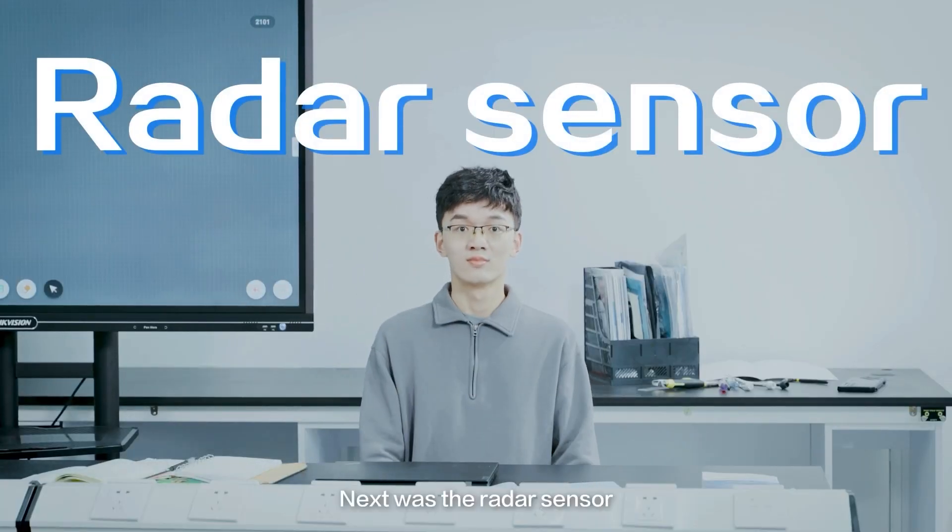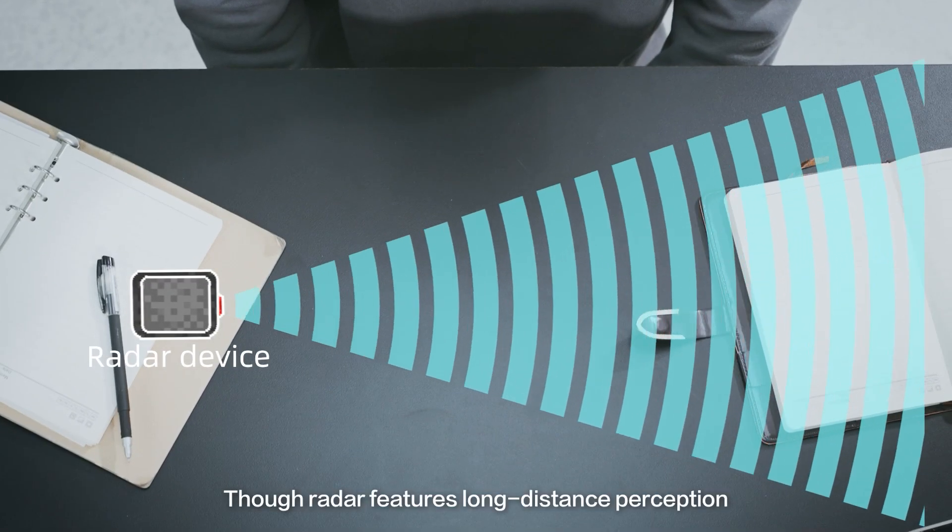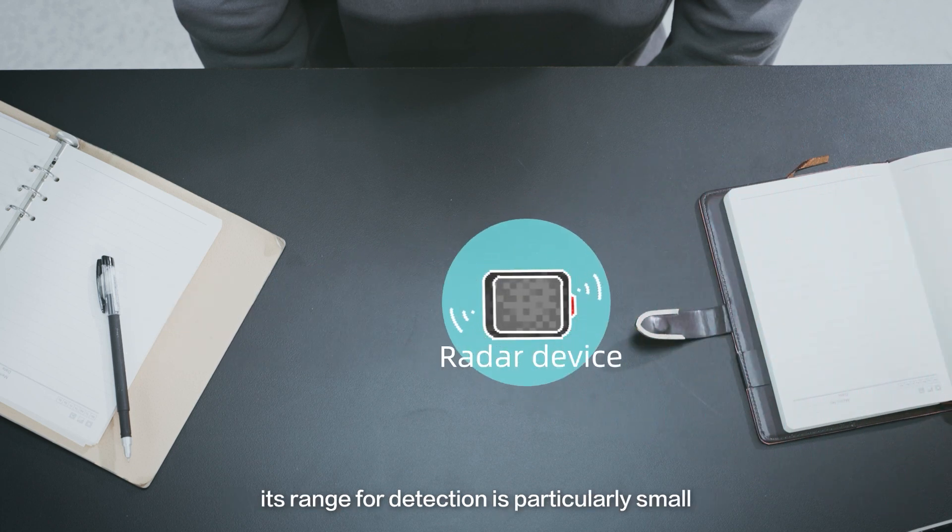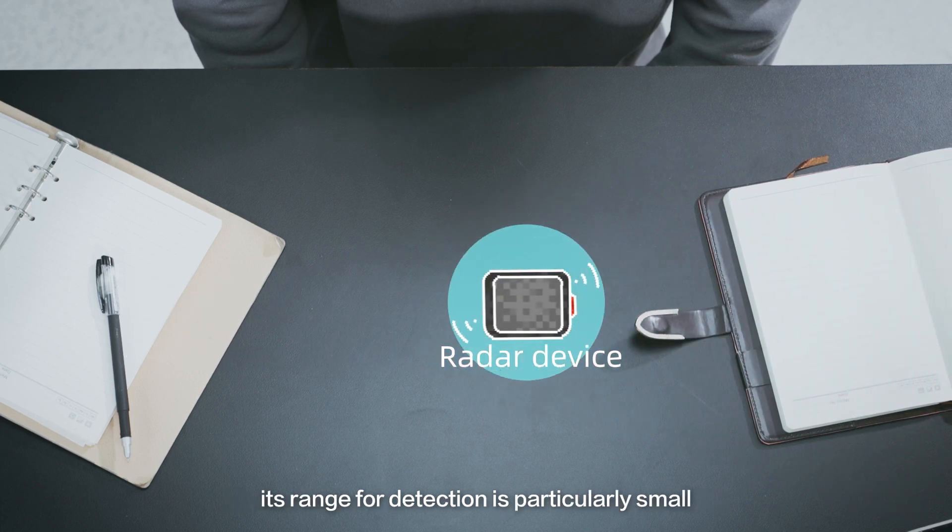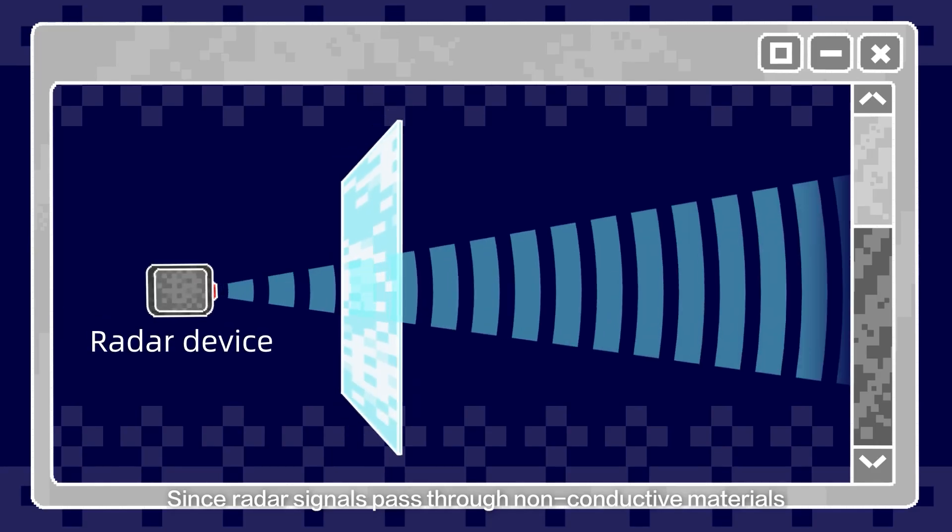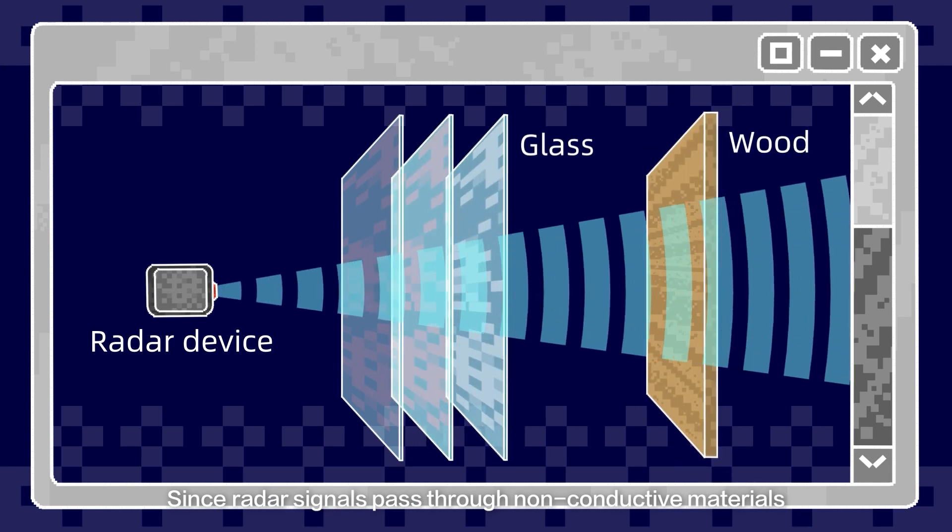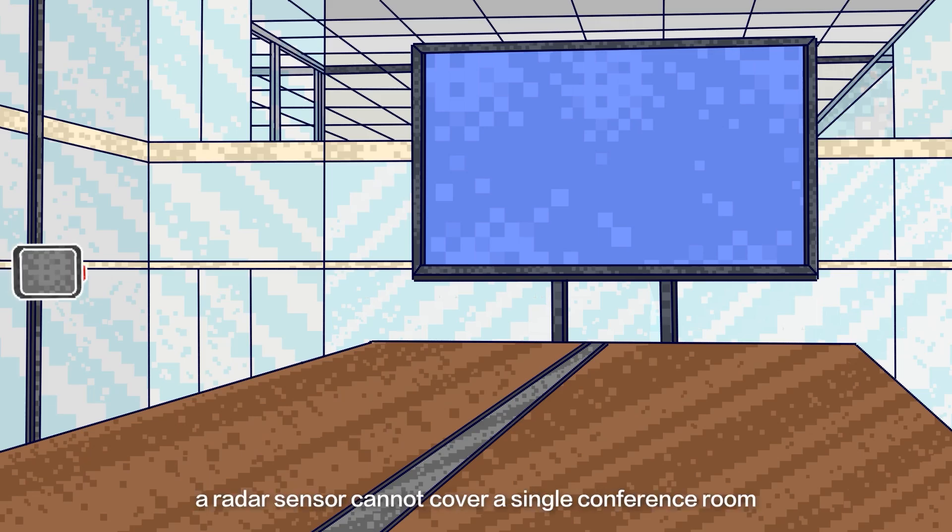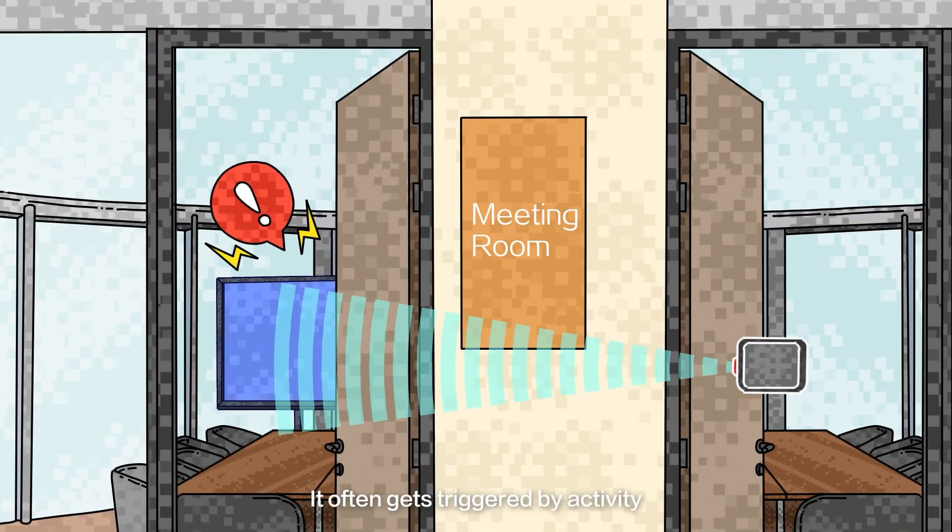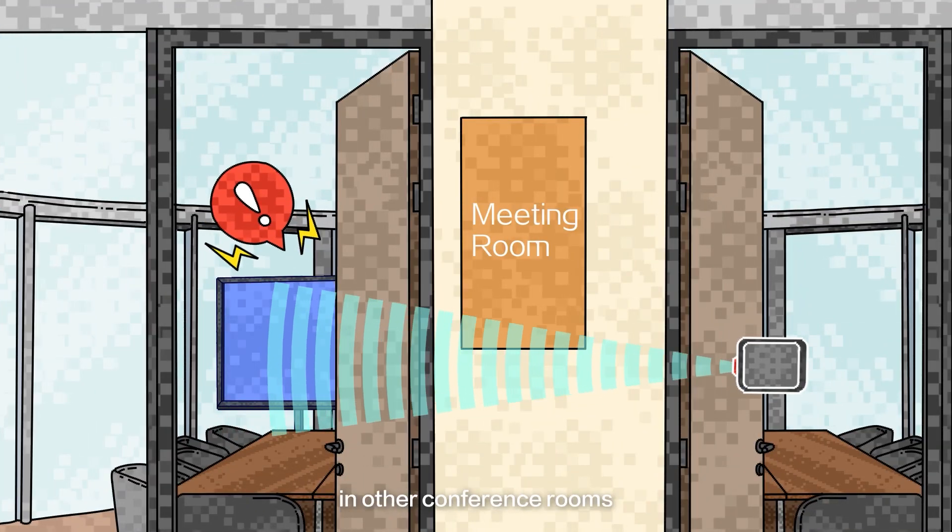Next was the radar sensor. Though radar features long-distance perception, its range for detection is particularly small. Since radar signals pass through non-conductive materials such as glass and wood, a radar sensor cannot cover a single conference room with any precision. It often gets triggered by activity in other conference rooms.